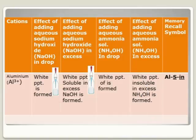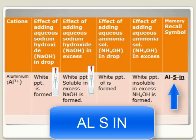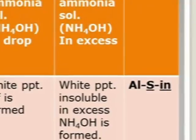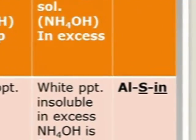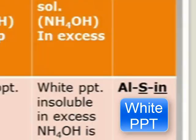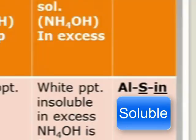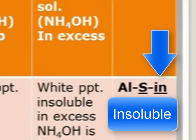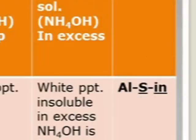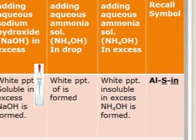The recall symbol here reads A-L-S-I-N, pronounced 'ALSIN'. This means that aluminium, represented by AL, forms a white precipitate with both sodium hydroxide and ammonium hydroxide. It is soluble in excess of sodium hydroxide, and insoluble in excess of ammonium hydroxide. So if you write ALSIN, that is a recall tip for aluminium: white precipitate, soluble in excess sodium hydroxide, insoluble in excess ammonium hydroxide.